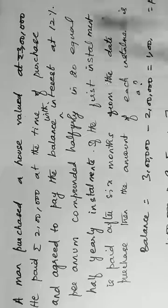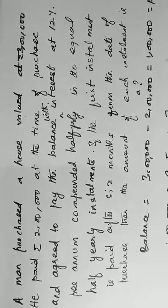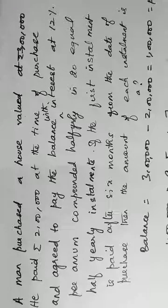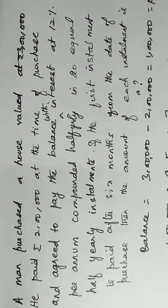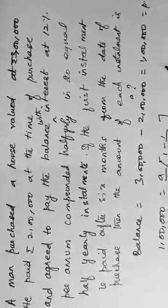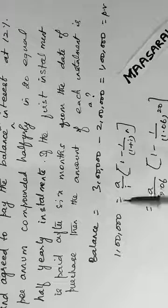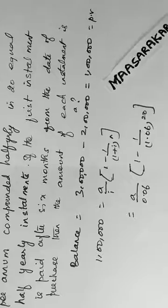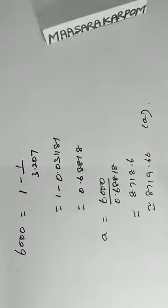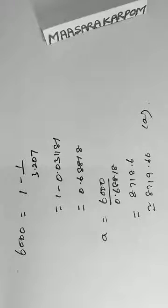A man purchased house valued 3 lakhs. Payments of 2 lakhs and 1 lakh. Using present value formula, you will get 8,719, option E.